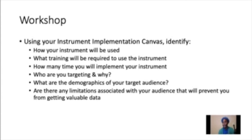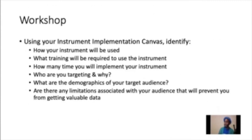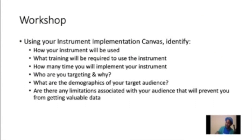For our next workshop, we're going to fill out the instrument implementation canvas. Take five minutes to identify: how your instrument will be used, what training will be required to use that instrument, how many times you will implement your instrument, who you are targeting and why, the demographics of the audience you're targeting, and any limitations associated with that audience that will prevent you from gathering valuable data. Fill out these six questions and document them on your canvas.